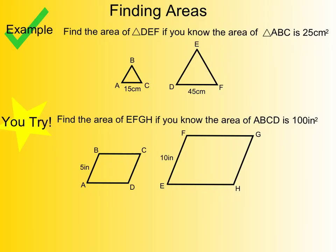Here we need to find an area. They're saying if the area of triangle ABC is 25 centimeters squared, we want to know the area of triangle DEF. They've given you one side of each triangle.